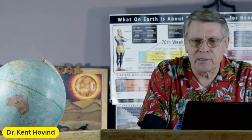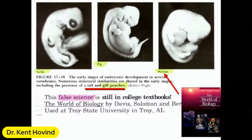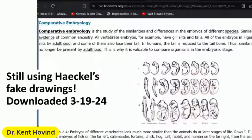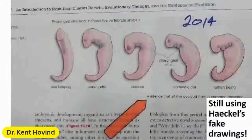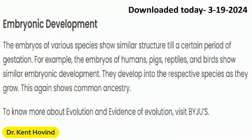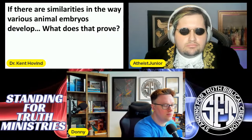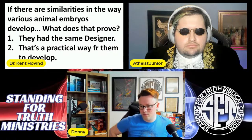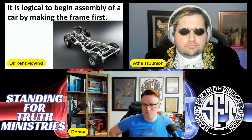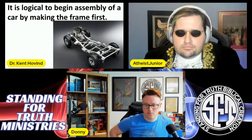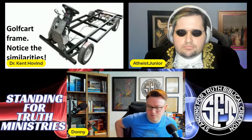Downloaded today from a biology library site — they're still teaching it using Haeckel's fake drawings: 'Comparative embryology — the study of similarities and differences of embryos at different stages in different species.' If there are similarities in the way various animals develop, what does that prove? They have the same designer. Maybe it's just a practical way for things to develop — it's logical to begin assembling a car starting with the frame.